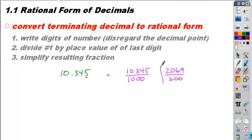This shows you that this number, 10.345, does have a rational form. It can be written as a fraction of two integers, 2069 over 200.